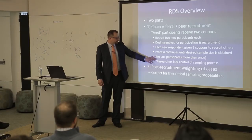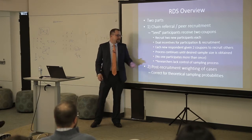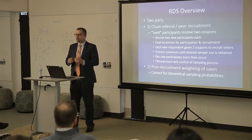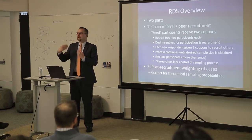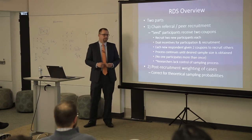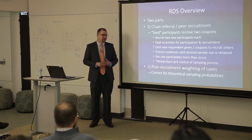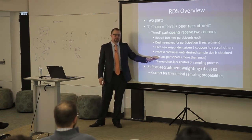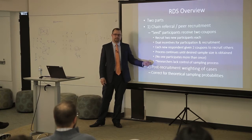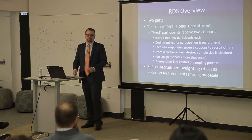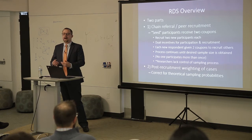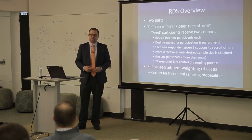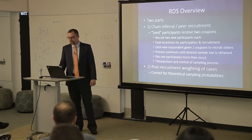There are implicit assumptions within this. One is that nobody participates more than once — you wouldn't want a case where I recruit Jim Moody and then he recruits me. While that is an assumption in the field, a lot of the statistical estimators don't make that assumption, which leads to some problems. The second assumption is that researchers pretty much lack control of the sampling process — you tell someone to go recruit the type of person you want and have to hope that they actually comply.